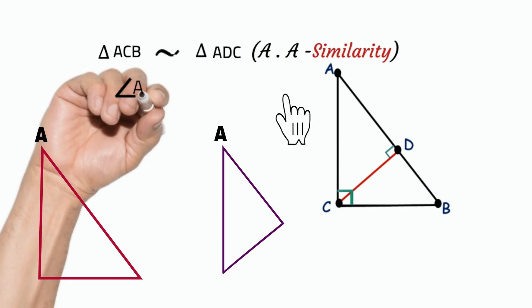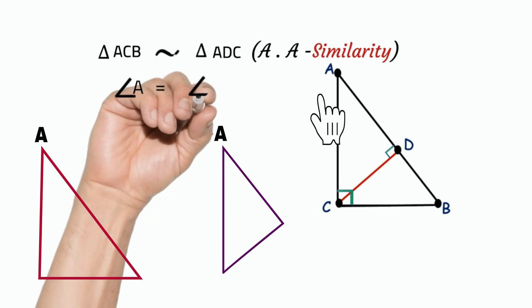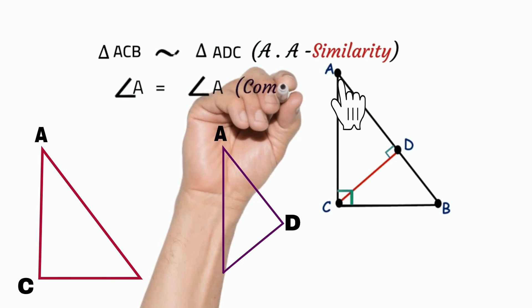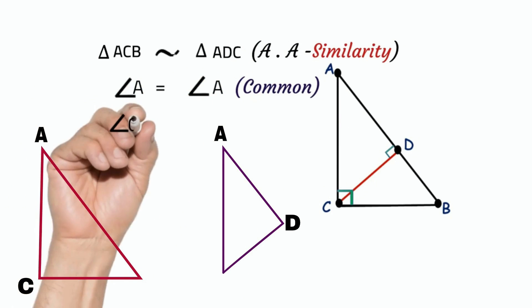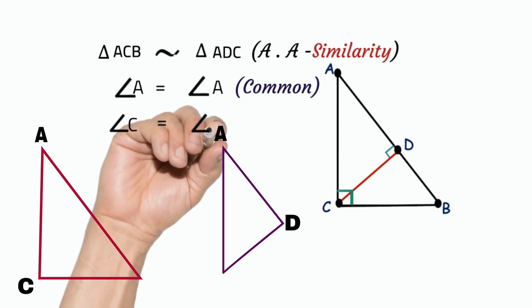Look friends, angle A is common in both triangles. Angle C equals angle D equals 90 degrees, given.